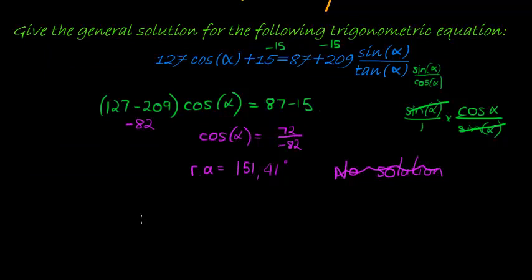So that our general solution is alpha equals the reference angle plus 360 times k, that's always the first solution for cos and sine. And for tan, it's just plus 180. The second solution is the other quadrant where cos would be positive, which is the fourth quadrant.